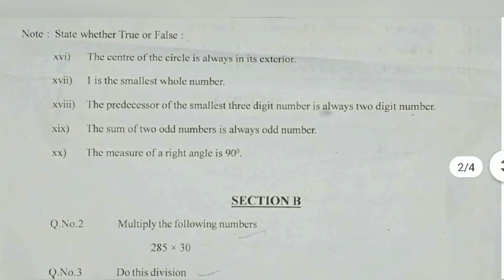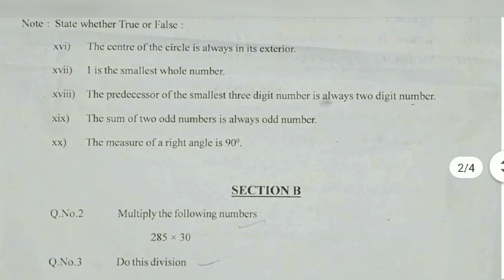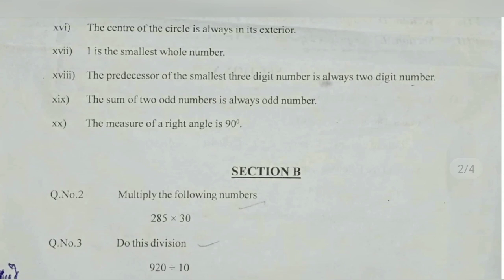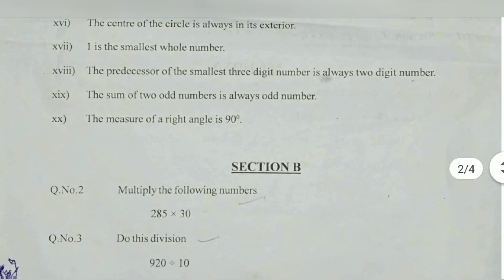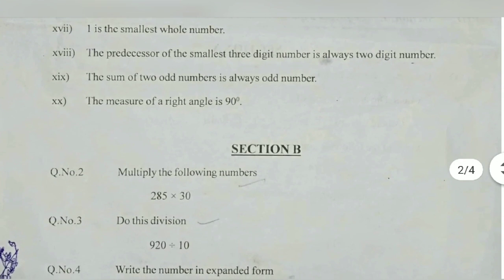The predecessor of the predecessor of a smallest 3 digit number is always 2 digit number. The smallest 3 digit number is 100, 100 minus 1 is 99, that is 2 digit number, that is true. The sum of 2 odd numbers always odd number - that is wrong actually. 3 plus 3 is 6 and 9 plus 9 is 18, so every time we will be getting an even number only.